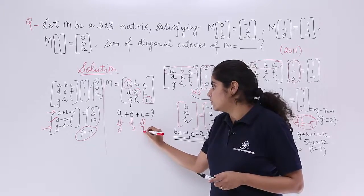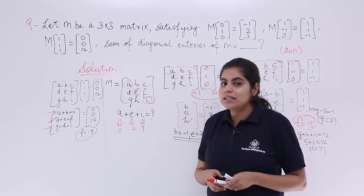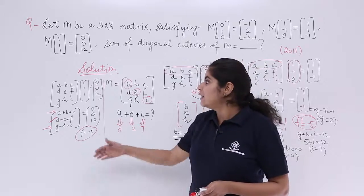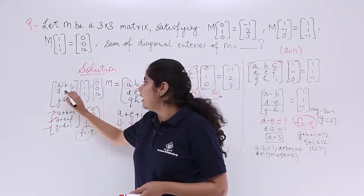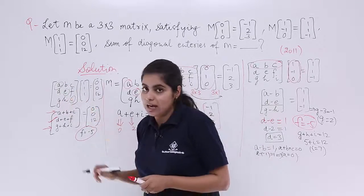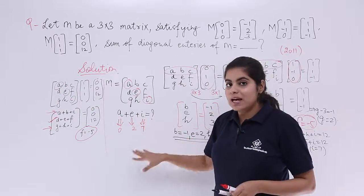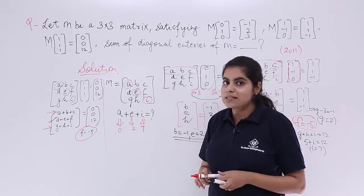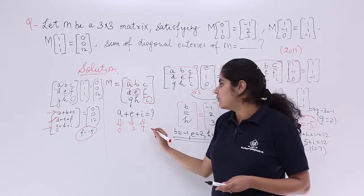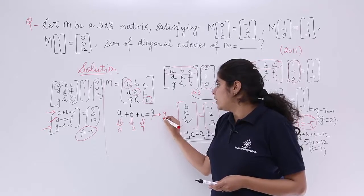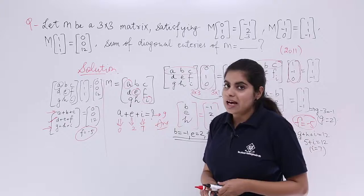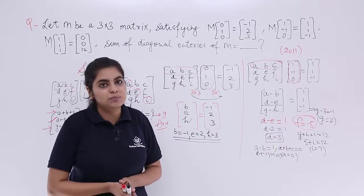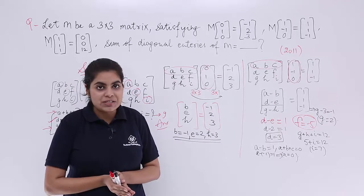Now we have all diagonal entries: A = 0, E = 2, I = 7. The sum of diagonal entries is A + E + I = 0 + 2 + 7 = 9. So 9 is the answer to this IIT-JEE question, which was based on matrices.